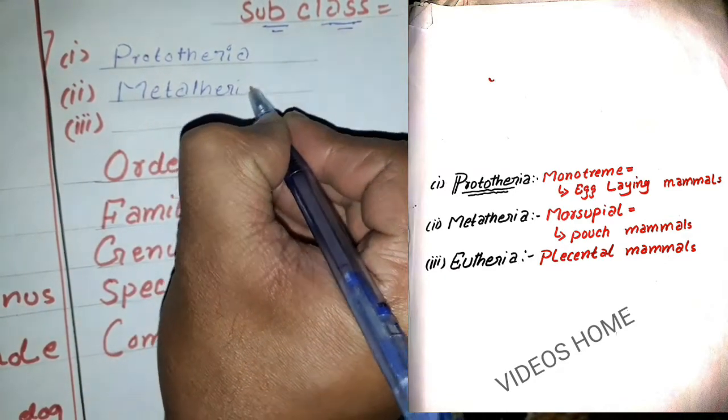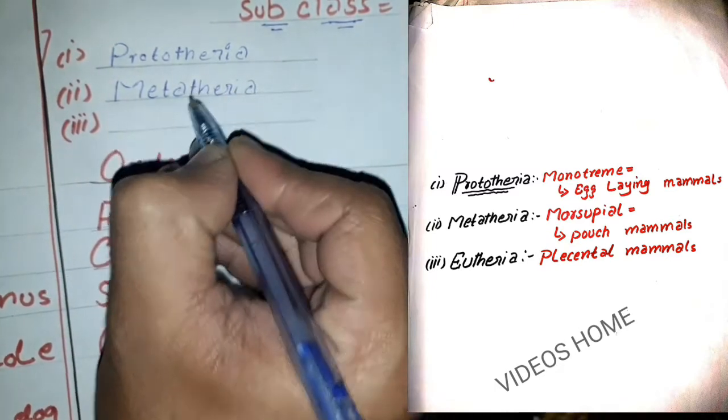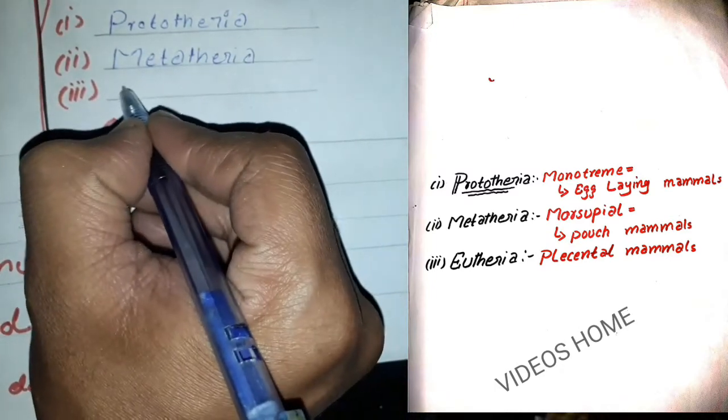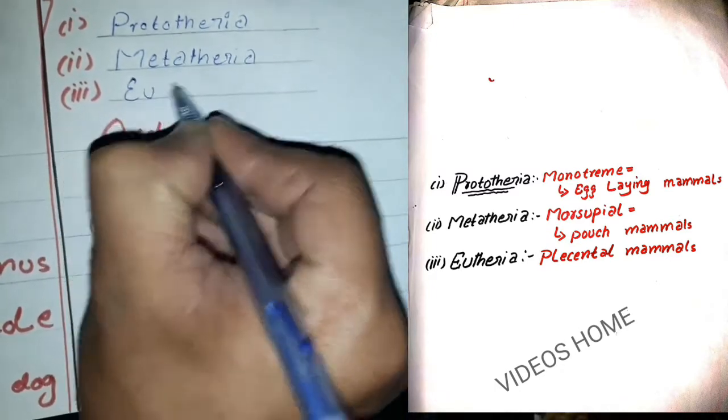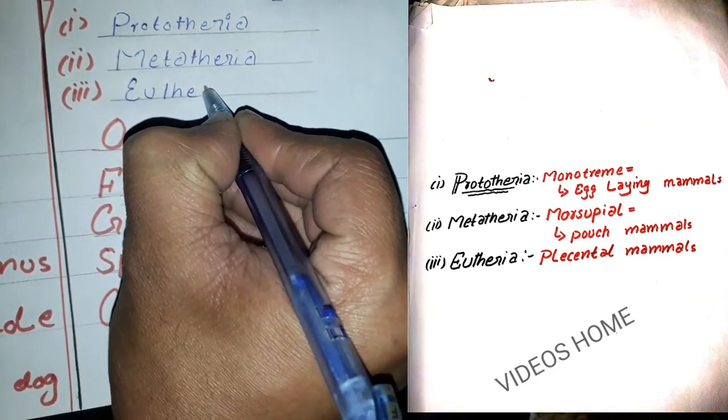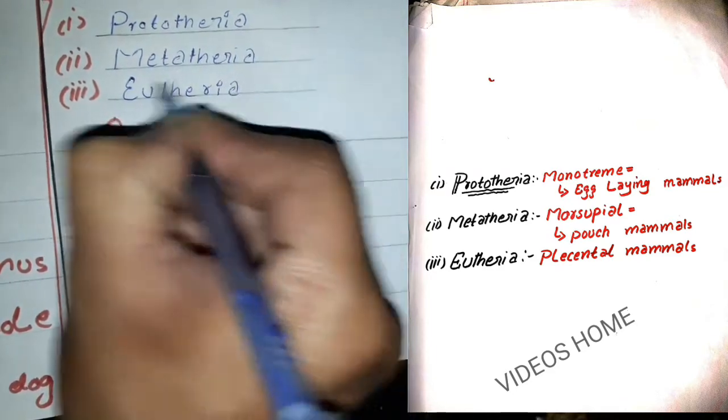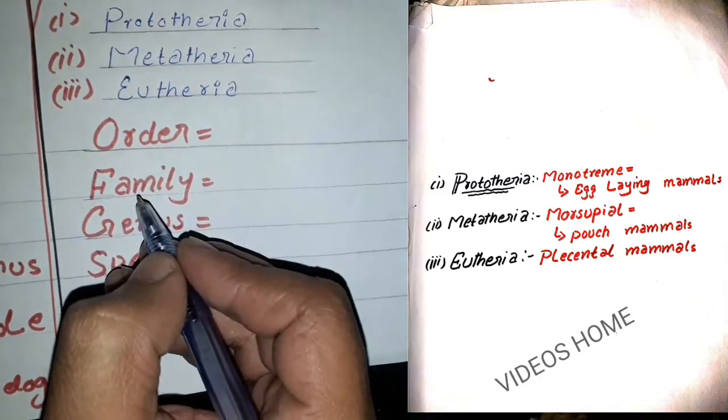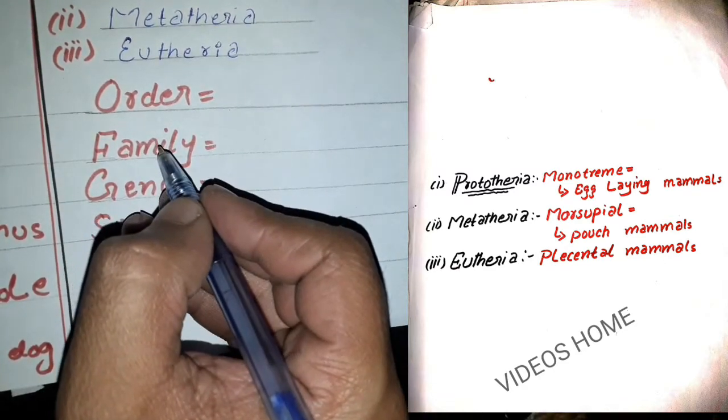marsupials - marsupials are pouch mammals. The third one is Eutheria - placental mammals. Our classification is about Eutheria, so